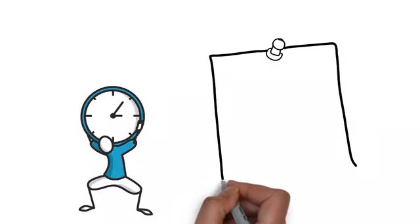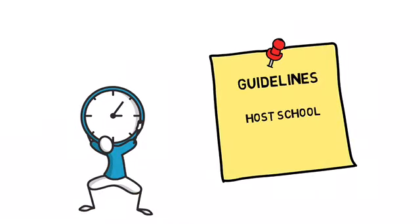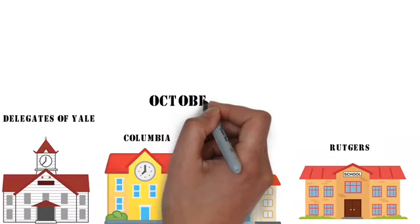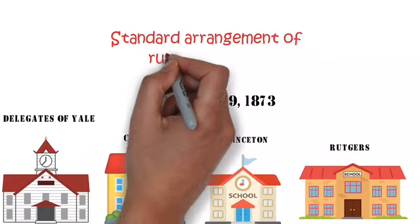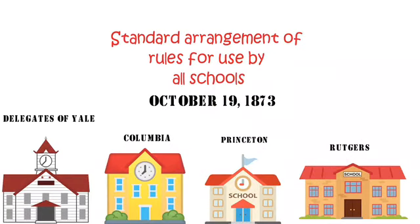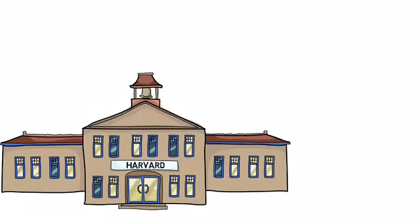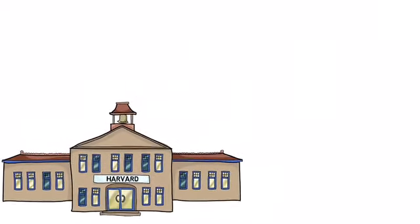Representatives of Yale, Columbia, Princeton, and Rutgers met on October 19, 1873, to create a standard set of rules for use by all schools. Teams were set at 20 players each and fields of 400 by 250 feet. Harvard avoided the meeting as they preferred a rugby-style game that allowed running with the ball.